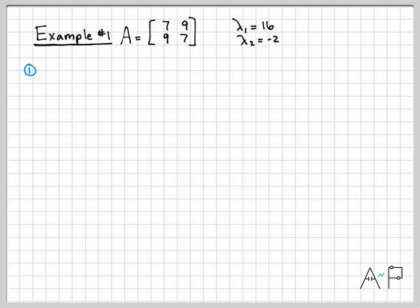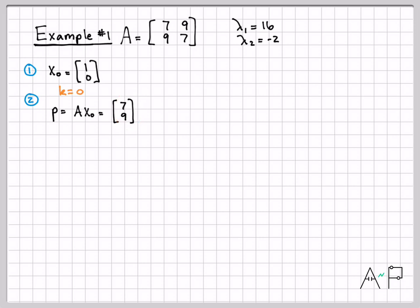Here's step one: we need to make a guess for x_0. I'm going to guess x_0 is [1, 0] — remember, one entry must have magnitude of 1, and the other can be anything. For k equals 0, I form the product A times x_0 and get [7, 9]. The largest magnitude entry is 9, so n_0 equals 9. Normalizing gives x_1 equals [0.77, 1]. For k equals 1, I form A times x_1 and the largest magnitude entry is 14.39, giving x_2.